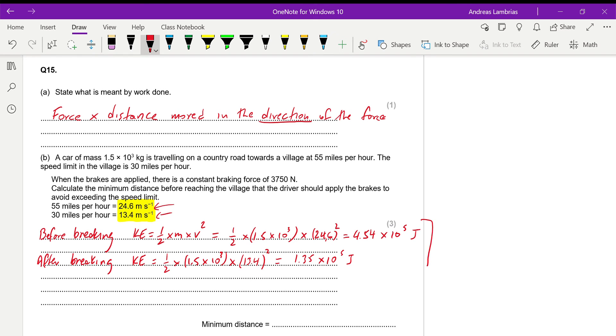Now, the difference between these two will be the work done by the braking force. So the difference in the kinetic energy will be 4.54 minus 1.35, of course, times 10 to the power of 5 joules. So the difference will be 3.19 times 10 to the power of 5 joules.